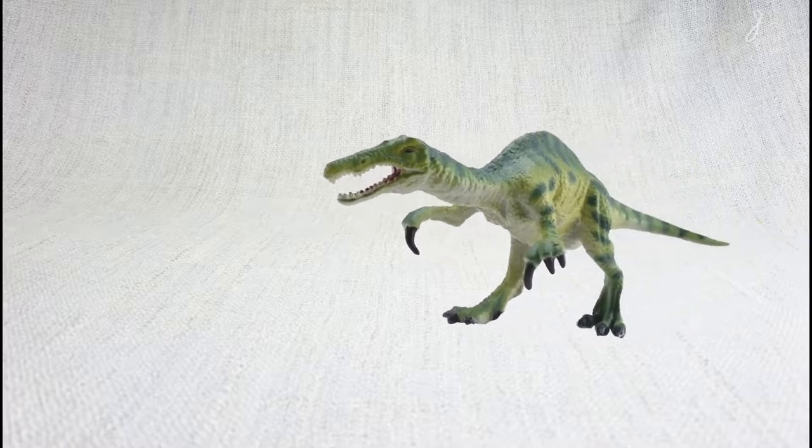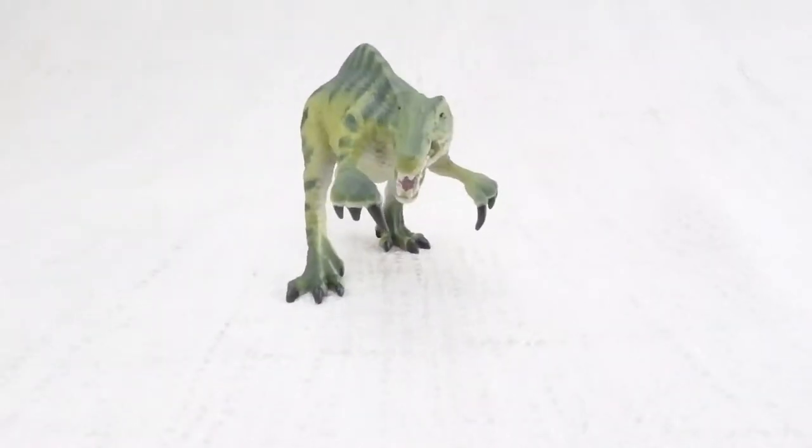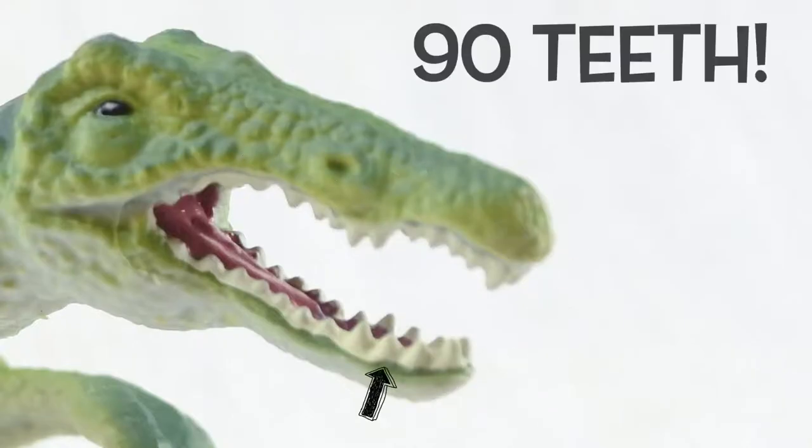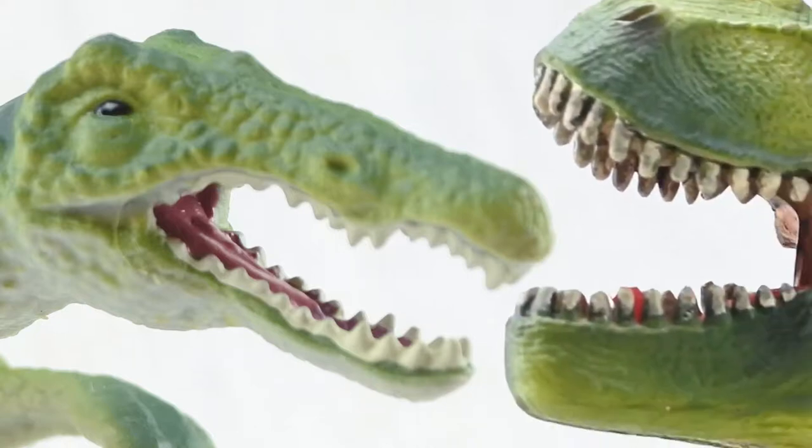Unlike a Spinosaurus, Baryonyx spent most of its time walking on two legs. It had over 90 teeth, twice as many as a T-Rex.